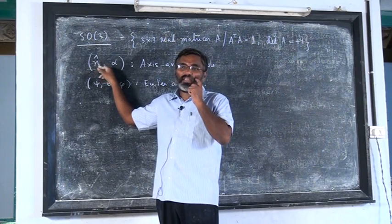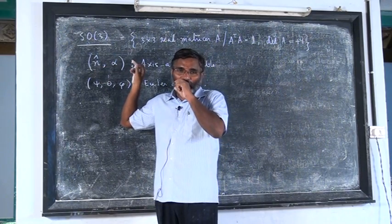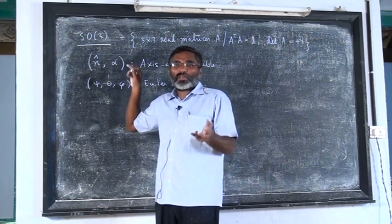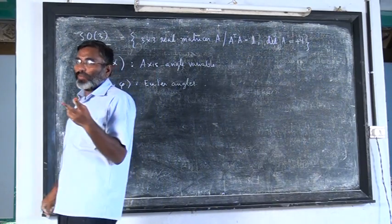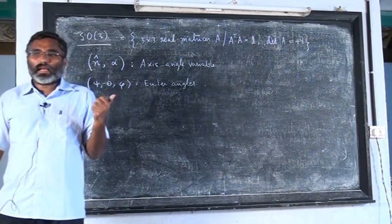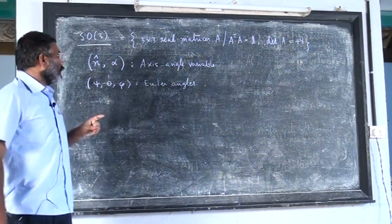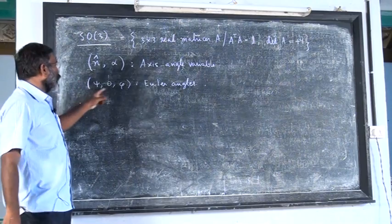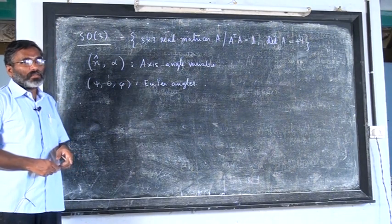n1² + n2² + n3² = 1. So, the three direction cosines of the axis means two parameters and one angle — three parameters altogether — otherwise three angles, these are Euler angles.